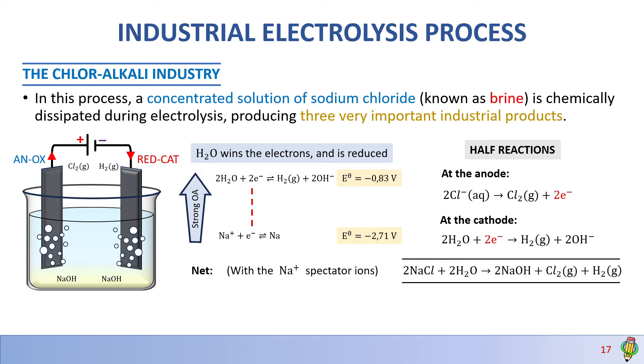At the end of the chlor-alkali industry process, we produce three important products: pure chlorine gas, pure hydrogen gas, and pure sodium hydroxide.